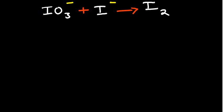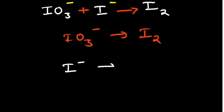All these reactants are going to be split into half reactions. We start with the first reactant: we have IO₃⁻, and we get it to our only product, which is I₂. Then we take the other reactant and also relate it to our only product, I₂. This only happens when you have a single product. This is a redox reaction because we have an oxidation reaction and a reduction reaction.